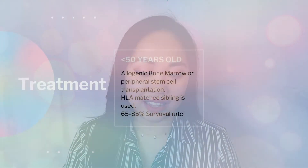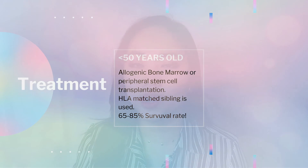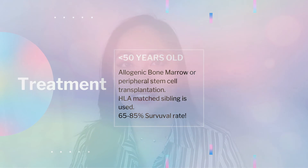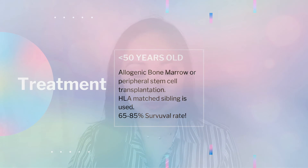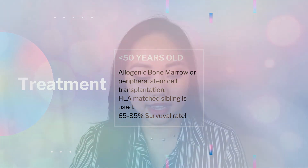Aplastic anemia has a poor prognosis if left untreated. For patients less than 50 years of age, the treatment is allogeneic bone marrow or peripheral stem cell transplantation using an HLA-matched sibling, with a 65 to 85 percent survival rate — which is really good.